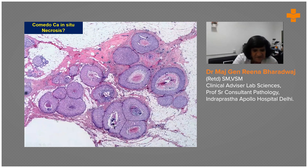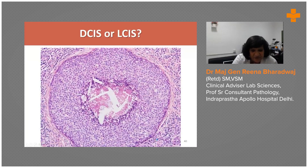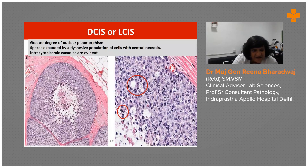Now let's look at this lesion. Again, the lobule is expanded and there is an element of some necrosis. Many of us would wonder: is this comedonecrosis or is it some form of LCIS? There is comedo-type necrosis but the cells are quite monomorphic. The higher power view shows the necrosis but the cells remain very monomorphic. When you find a greater degree of nuclear pleomorphism with spaces expanded by an adhesive population with central necrosis, but you can see the intracytoplasmic vacuoles, you know that this is LCIS, which at times can show central necrosis.